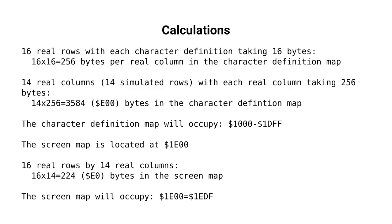The VIC can only address memory up to hex 2000, and therefore if we locate the character map at the lowest realistic address at hex 1000, then it will occupy memory from 1000 to 1DFF, and therefore the highest location we can give for the screen map is at hex 1E00.